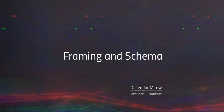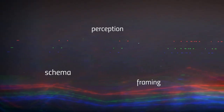Hi everyone, my name is Todor Mitev and in this short lecture I want to talk to you about the concepts of framing and schema. These concepts are fundamental parts of how we perceive reality and they are used to describe the mechanics of perception. This is really important to understand if you're working in media and if you want to understand the process in which audiences perceive reality through their interactions with content. I will start by talking about perception, then jump into schema, and finally talk about framing as a concept.